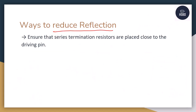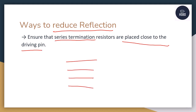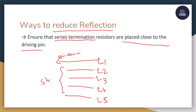The next method to reduce reflections is to ensure that the series termination resistor is placed close to the driving pin. Let me explain with an example of a layer stackup. I have a multi-layer stackup with L1, L2, L3, L4, and L5. This is my microstrip line, and these are the stripline traces. My driver is here, and the series termination resistor is on the top layer. The distance between the driver and the series termination resistor should be as small as possible, and they should be connected on the same layer.